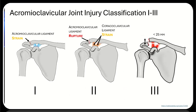The first three Rockwood grades are a sequential series of strain, rupture, and strain to complete dislocation. Rockwood 1 is a strain or partial rupture of the AC ligament, with the inferior border of the clavicle in line with the acromion. Rockwood 2 progresses to a rupture of the AC ligament, but the coracoclavicular ligament is only strained; the inferior border of the clavicle does not extend above the superior border of the acromion. Rockwood 3 is a complete rupture of the coracoclavicular ligament and displacement of the clavicle from the acromion, where the inferior border extends above the superior border of the acromion, but the distance between the clavicle and the coracoid is not more than 25 millimeters.